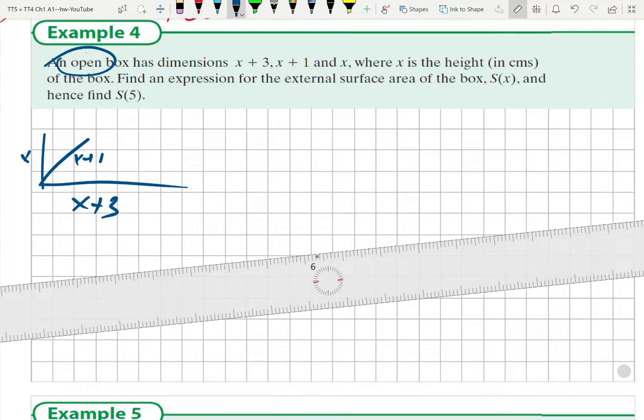Now it's open, which means there's only one of these faces missing. We need to find the external surface area of the box.